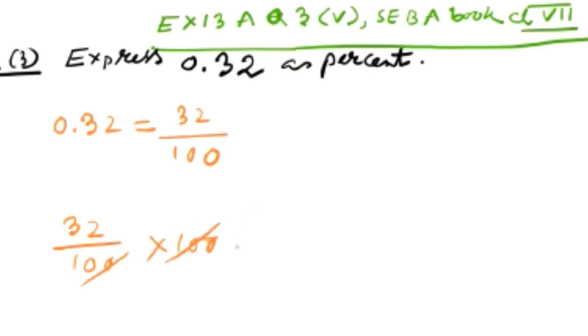And 32 by 100 into 100. So then percent ka symbol lagalo at the end. 32 percent. So this is the answer.